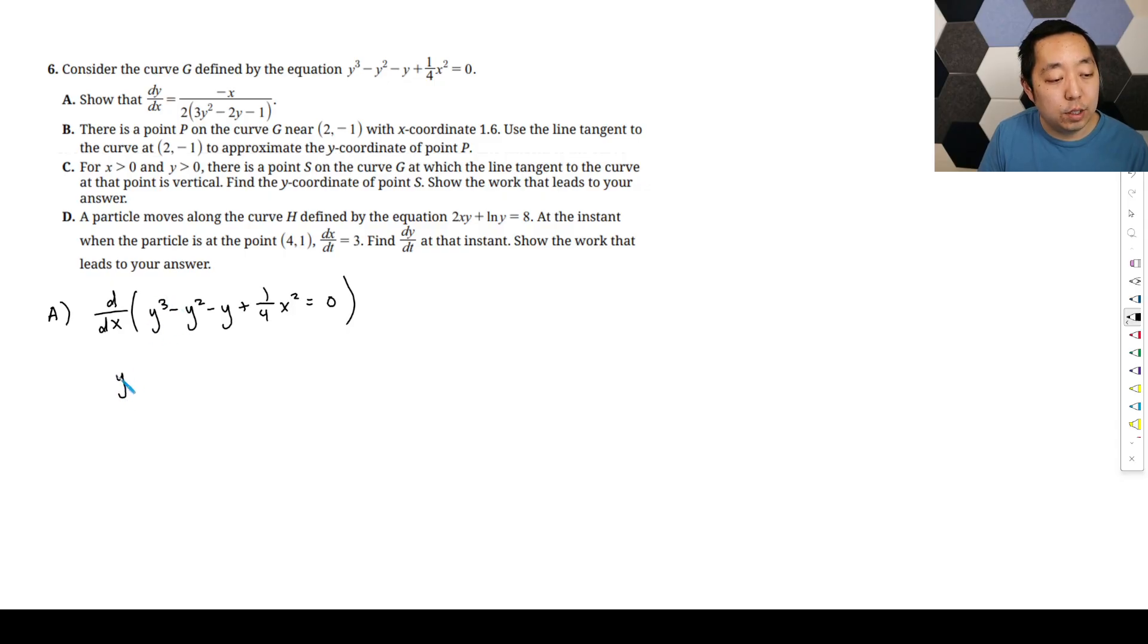So derivative y cubed is 3y squared then times dy dx. Derivative y squared is power rule 2y but then by chain rule multiply by dy dx. Derivative of y is just dy dx. Derivative of one fourth x squared is just power rule, it's going to be one half times x. And derivative zero is just zero.